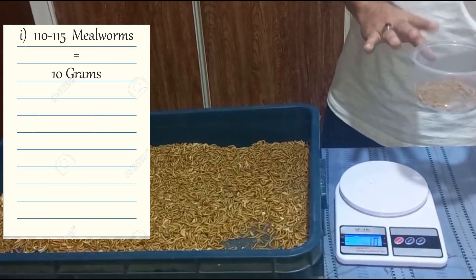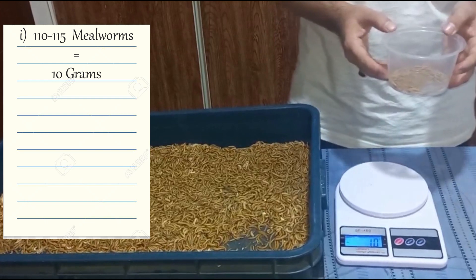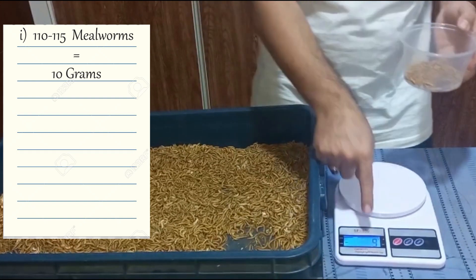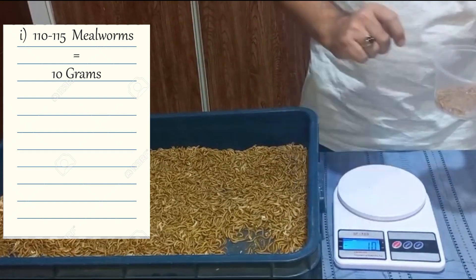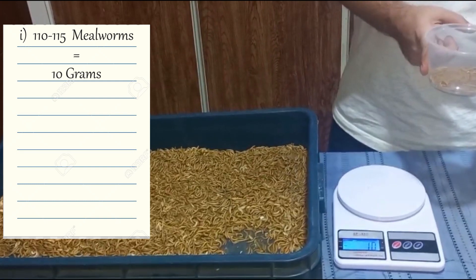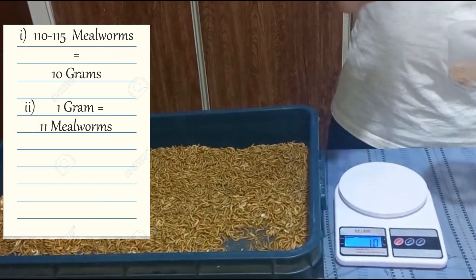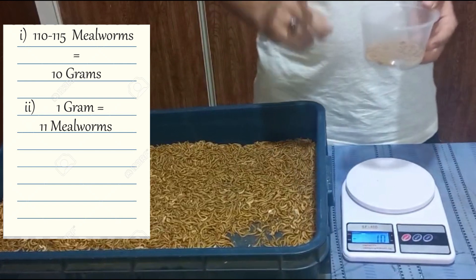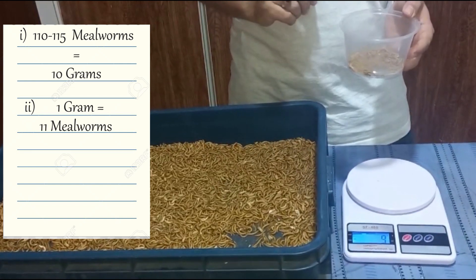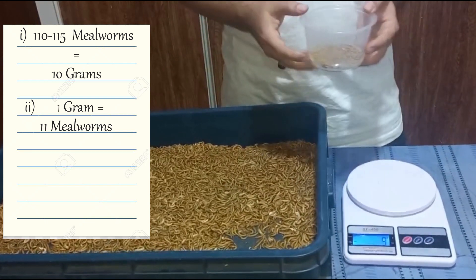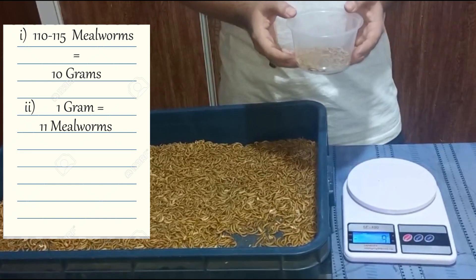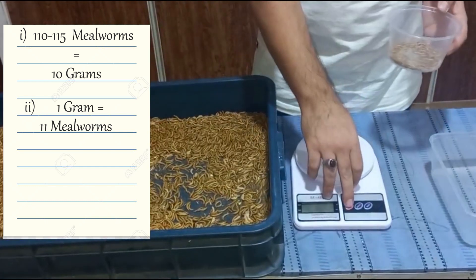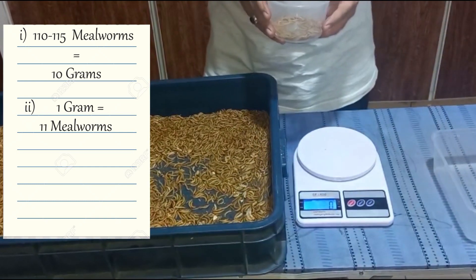We consider 110 mealworms per 10 grams. So 110 divided by 10 grams gives us an average of 11 counts per gram. That means 1 gram equals 11 mealworms.